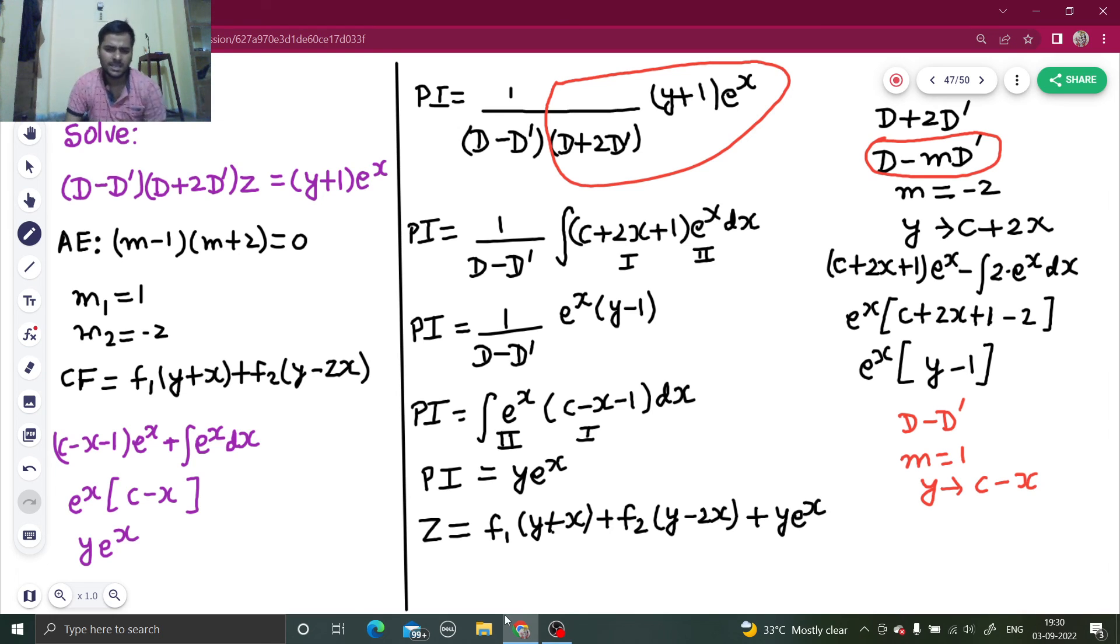Fine. Again, an easy one. First of all, auxiliary equation. From there on, get your complementary function. That's easy. For particular integral, convert each factor into integral, write y in terms of x. For that, compare each factor to d minus md dash. From there you will get m, and write y as c minus mx. In both cases, you have to use integration by parts. I had to repeat the same step twice. So I got my final particular integral as ye^x. Final solution was z equals to CF plus PI. That's it.